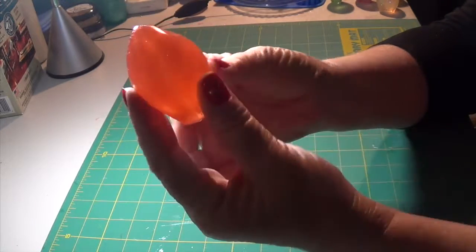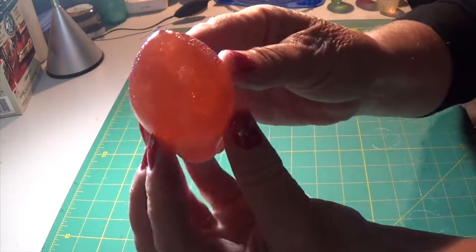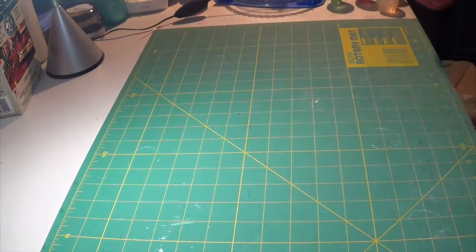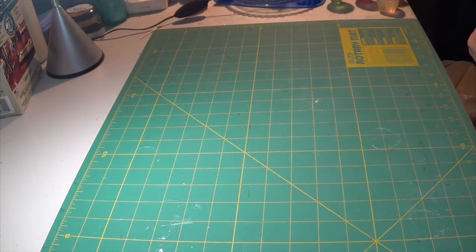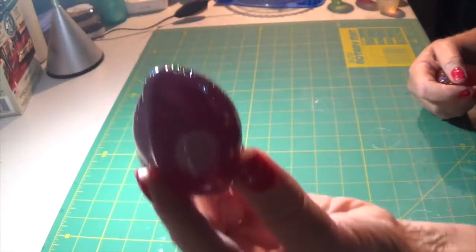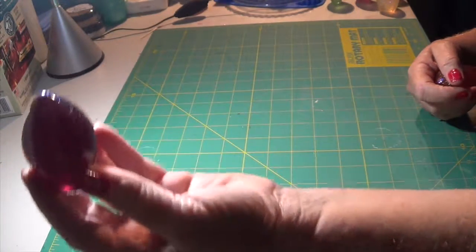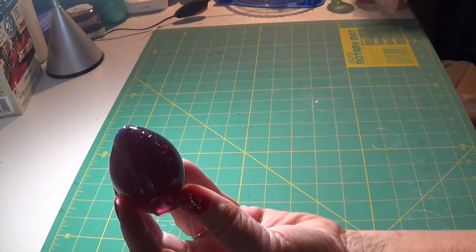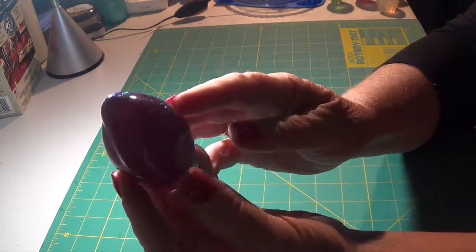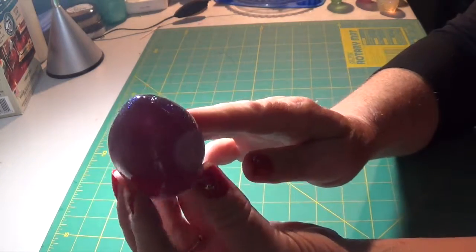These are the resin globes I made. I use them as the tops of walking sticks I've made. I've made about six of them.